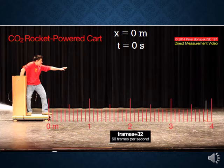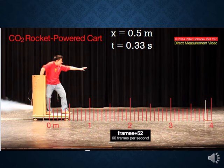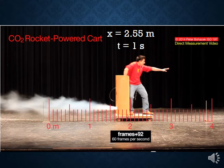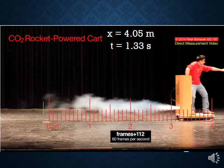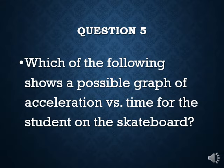We've broken the video down to isolated frames. At t = 0 s, position is 0 m; at 0.33 s, 0.5 m; at 0.67 s, 2.55 m; and at 1.0 s, 4.05 m — going forward by one-third of a second each time. We can see the position of the cart at each of those times. Based on that, we'll start from acceleration and work backwards through the graphs. Which graph of acceleration versus time represents the student on the skateboard? Since we're talking about constant acceleration, you want a graph that represents constant acceleration.